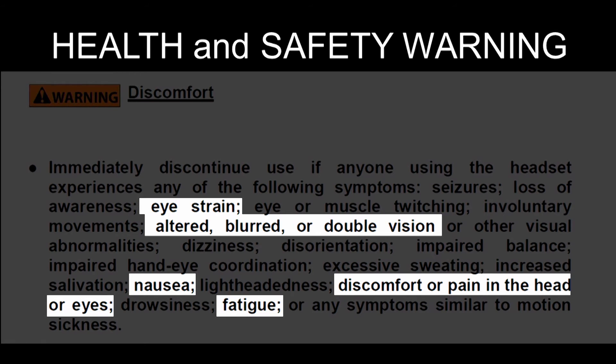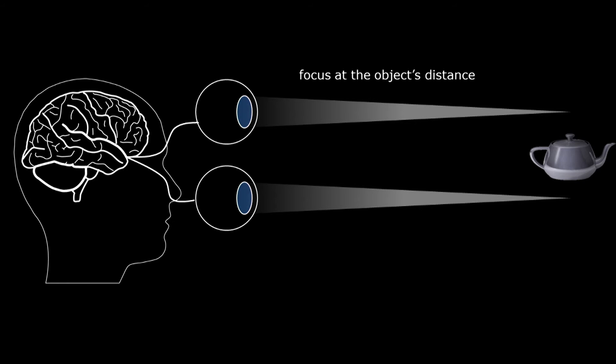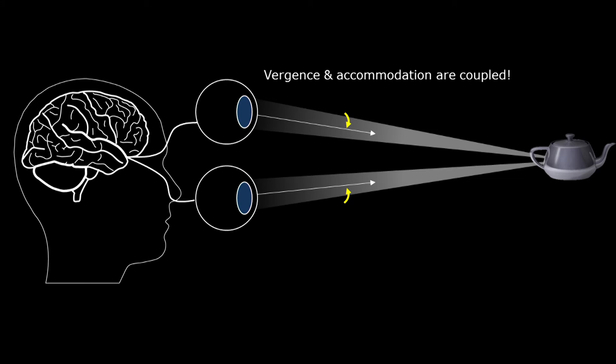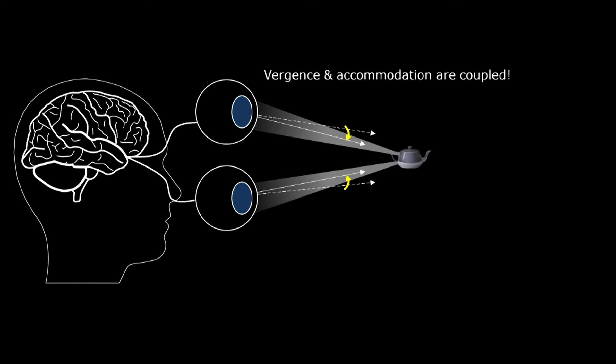So why do we have vergence-accommodation conflict in VR head mounts? In the real world, when we are looking at an object, our eye first focuses at some distance, which is called accommodation. The second thing our eye does is it will rotate or verge toward each other so that the two retinal images will match up. Naturally, vergence and accommodation are always coupled together. When things move closer, we focus a little bit harder and we verge a little bit more, so the two cues are still coupled together.